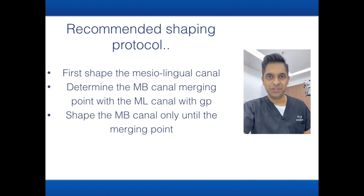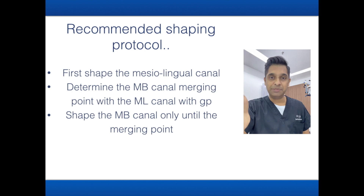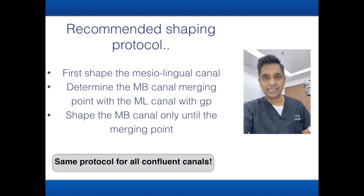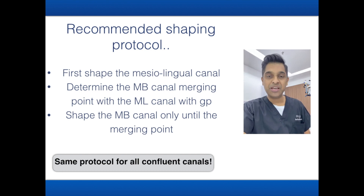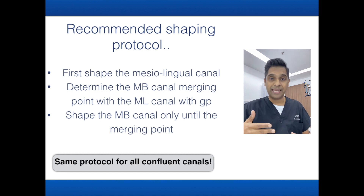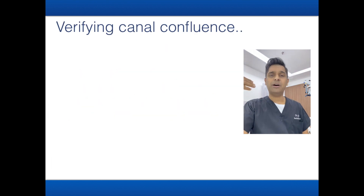The recommended plan is to first shape the easier canal — the mesial lingual canal — all the way to the apex. Then place your GP in the mesial lingual canal and use your file to create an indentation. In that indentation, you can determine exactly where the canal is merging. Once you know the merging point, it becomes very easy to plan your next step. This concept applies to all other teeth as well.